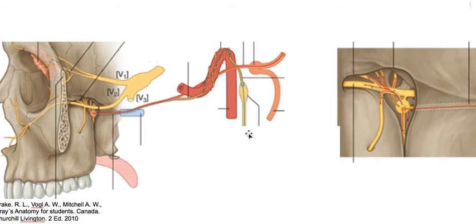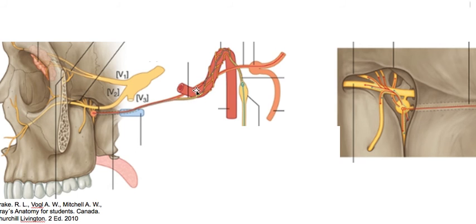Here we have the sympathetic innervation from the sympathetic trunk. The preganglionic neurons synapse at the superior cervical ganglion, and the deep postganglionic neurons form the deep petrosal nerve, which goes to the internal carotid plexus via the internal carotid nerve. The deep petrosal nerve and the greater petrosal nerve join together to form the nerve of the pterygoid canal, which carries both parasympathetic and sympathetic innervation.